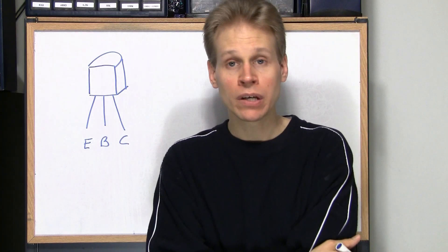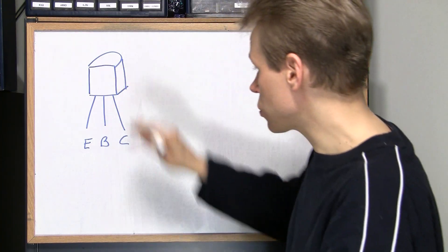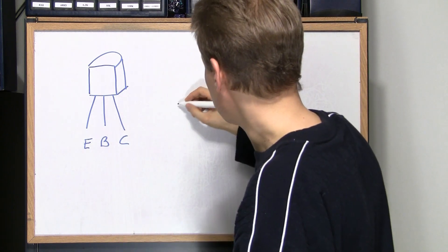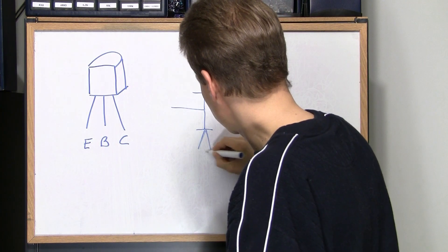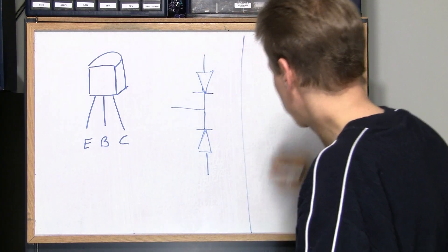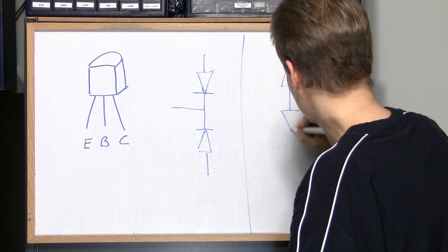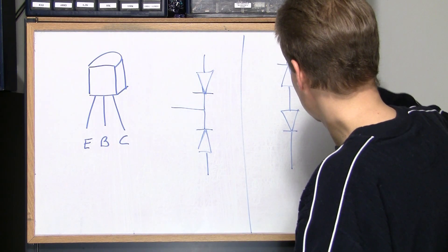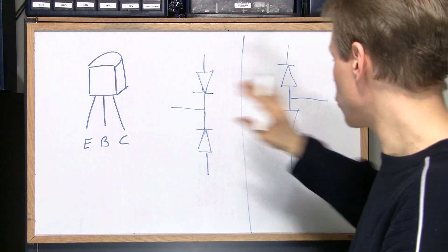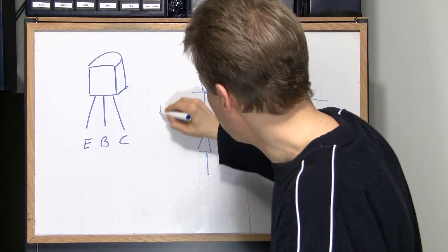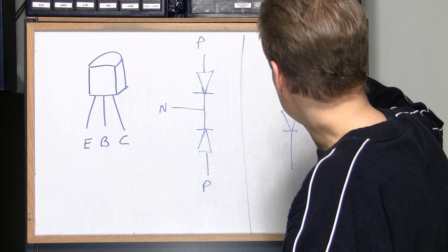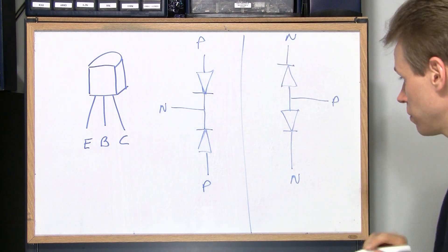This is how you test transistors with a normal diode checker in your DMM or voltmeter or whatever you have. So this transistor looks like either two diodes face to face or back to back. So I'll just draw that real quickly. So we have two transistors here effectively. Here we have a PNP and we have an NPN transistor.